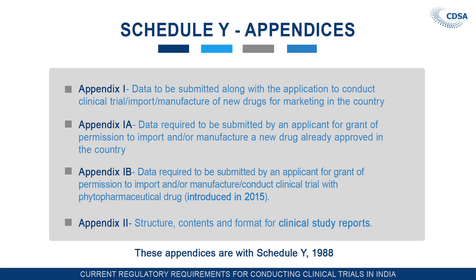Appendix 1B is regarding the data required to be submitted by an applicant for grant of permission to import and/or manufacture or conduct of clinical trial with a phytopharmaceutical drug. This appendix has been introduced in 2015.